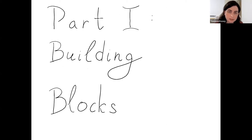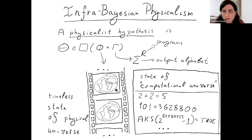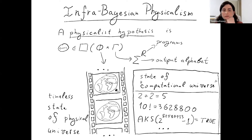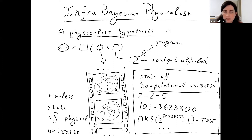We'll start from the building blocks. Information physicalism — I'm not going to explain it in full here; I gave an hour-long talk about this and there's an article on the Alignment Forum. But to give a brief summary: information physicalism is a framework for describing embedded agents — agents that know they're part of some universe and have an unprivileged position in it.